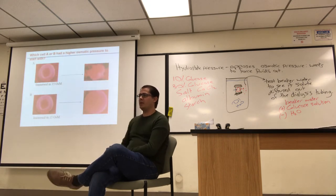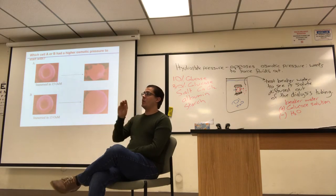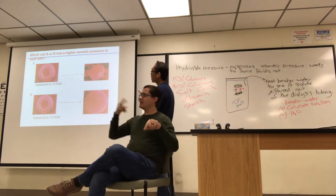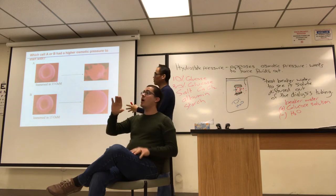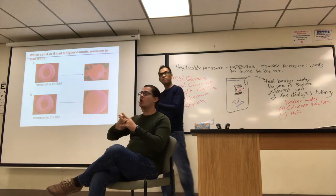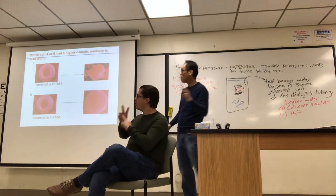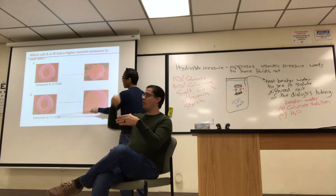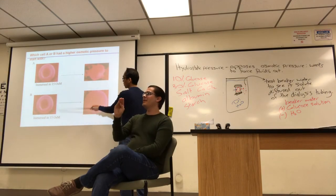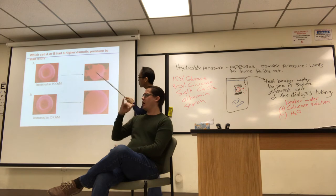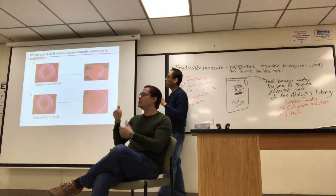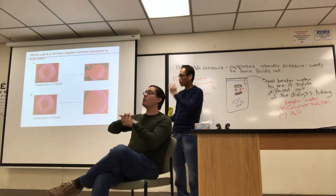Let's get back to osmotic pressure. Which cell — A or B — had a higher osmotic pressure to start with? You have to consider the starting point versus the finish. Both cell A and cell B were immersed in a 15 milliosmolarity solution. But look how they ended up: one shrank, one got all swollen. Which had the higher osmotic pressure to start?